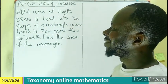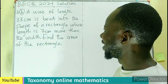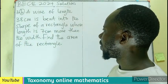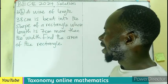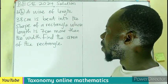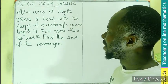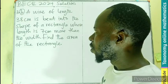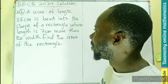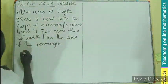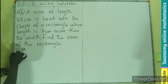A wire of length 38 cm is bent into the shape of a rectangle whose length is 7 cm more than the width. We have to find the area of that rectangle. This is BEC 2024 question number 3B.